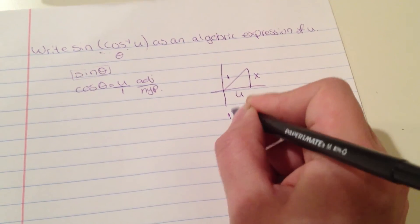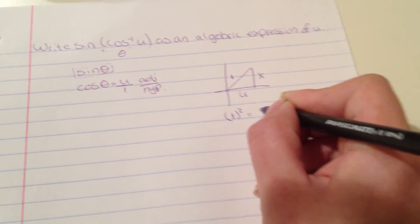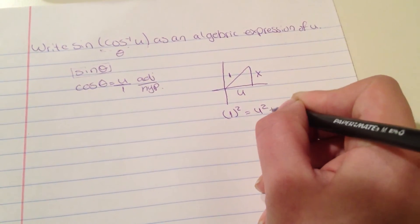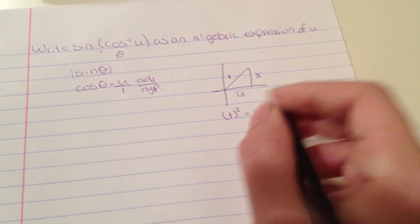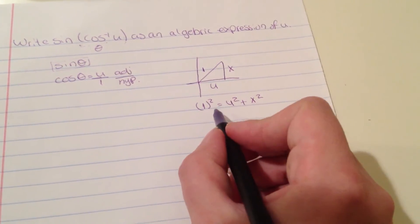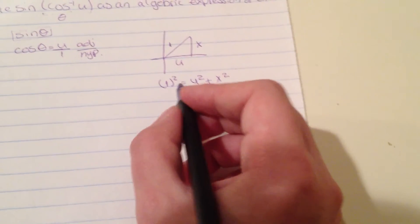We're going to do 1 squared equals u squared plus x squared. Then we solve the problem, so it's going to be 1 equals u squared plus x squared.